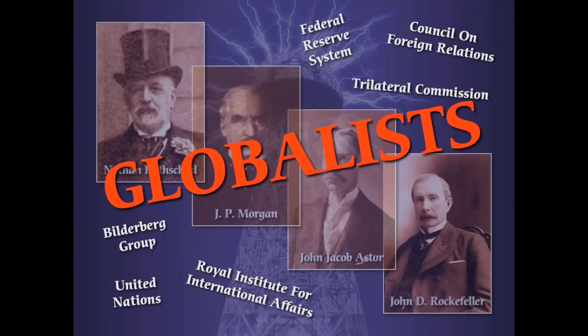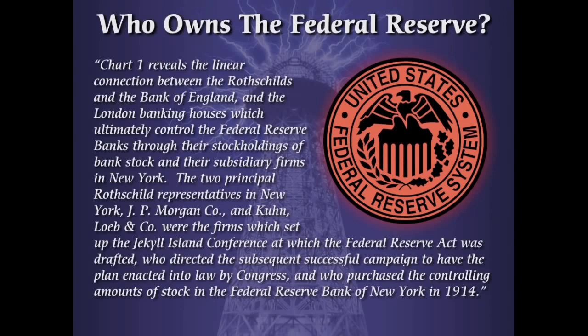These globalists always work through think tanks that support global government. Part of the organization that these gentlemen founded was the Federal Reserve System. Part of the research into this is the connection between the Morgans and the people who owned the Federal Reserve System. The Morgans are some of the owners of the Fed — the Morgans, the Rothschilds, the Schiffs, and many other influential financiers and bankers in the late 19th and early 20th centuries.